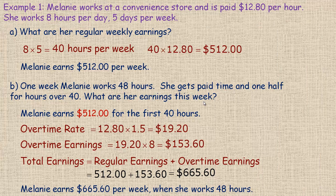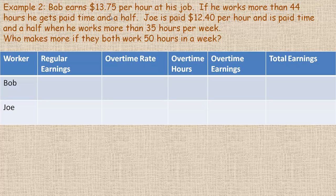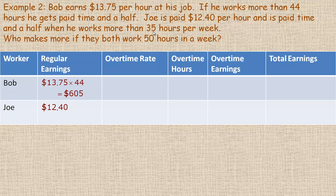In the last example, Bob earns $13.75 per hour and gets paid time and a half after 44 hours. Joe is paid $12.40 per hour and gets time and a half after 35 hours. We're asked who makes more if they both work 40 or 50 hours. Bob's regular earnings are $13.75 times 44 = $605. Joe's regular earnings are $12.40 times 35 = $434.